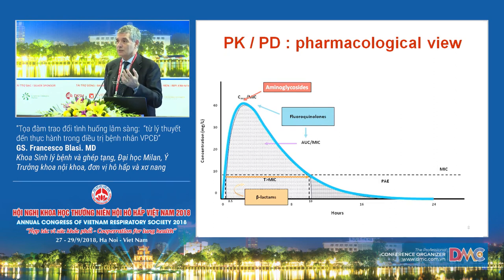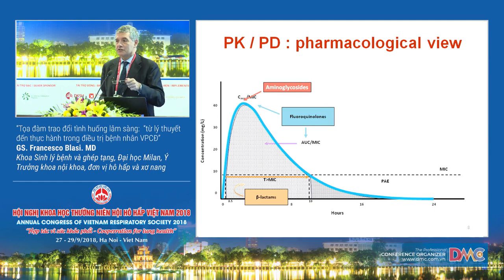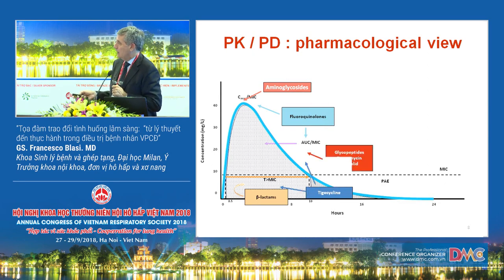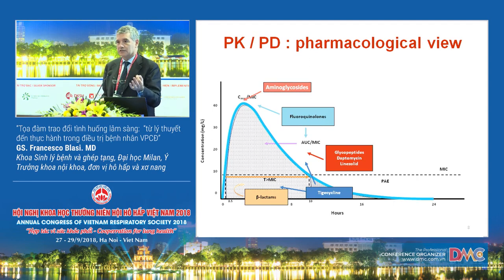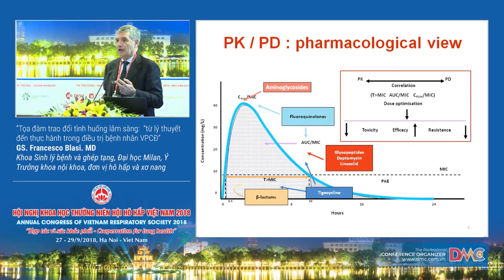For example, levofloxacin — you can use 750 mg once daily if you think C-max is more important, or 500 mg twice a day if you think AUC is more important. You pay for the 500 mg twice-daily regimen with more side effects, while 750 mg gives good efficacy with fewer side effects. The other antibiotics work in a mixed way, so knowing the PKPD lets you decrease toxicity, increase efficacy, and decrease resistance emergence.